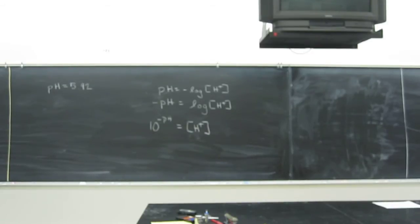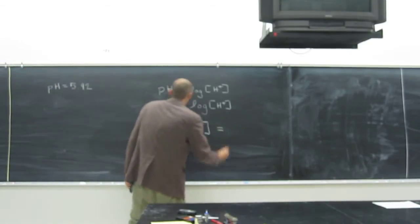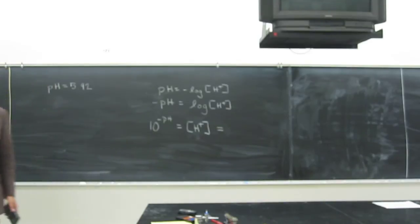So all you've got to do is plug it into your calculator now. 10 raised to the negative 5.92, and you should expect to get something around, because this is about 6, right? So you should expect to get something about 10 to the negative 6.